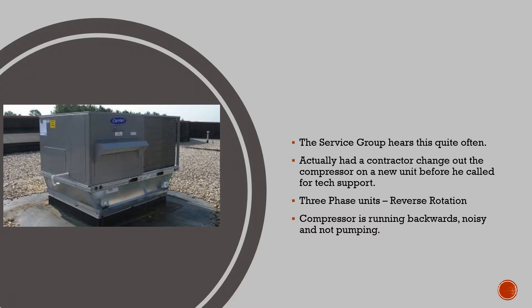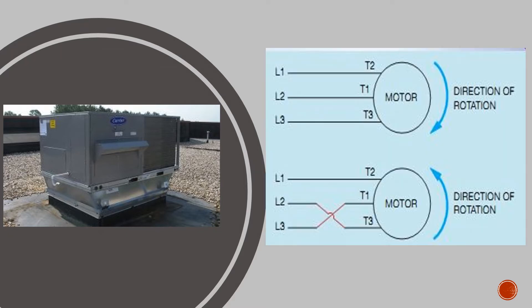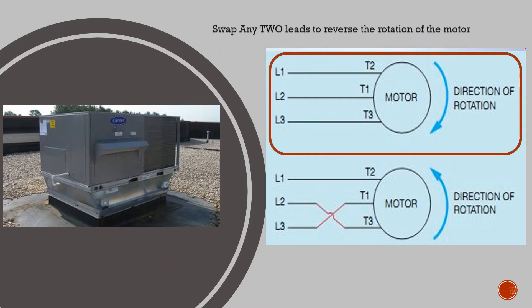In this example, we have a three-phase motor turning in the wrong direction. By swapping any two leads, we can reverse the rotation of the motor. By swapping L2 with L3, we change the direction of the motor.